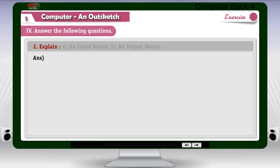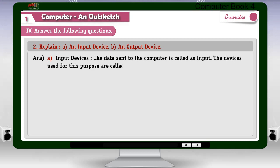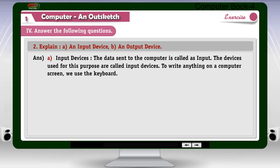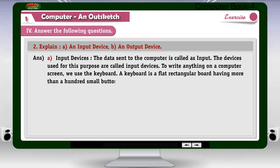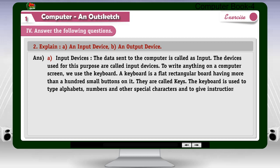Question 2: Explain (A) an input device and (B) an output device. Answer A — Input Devices: The data sent to the computer is called input. The devices used for this purpose are called input devices. A keyboard is a flat rectangular board having more than a hundred small buttons called keys, used to type alphabets, numbers, and special characters, and to give instructions to the computer.